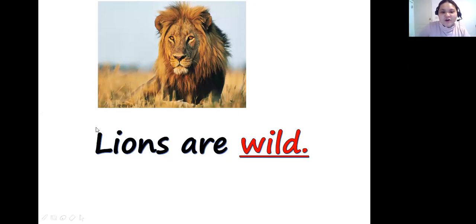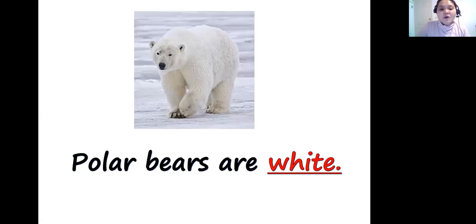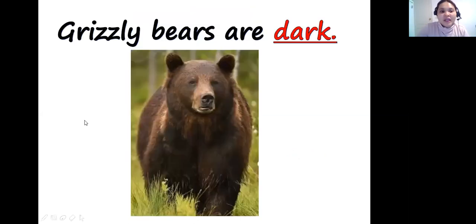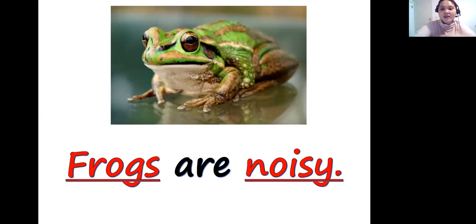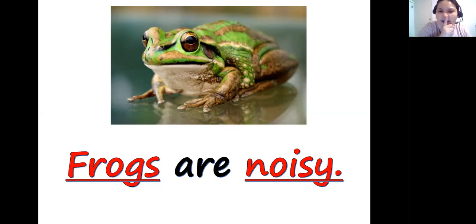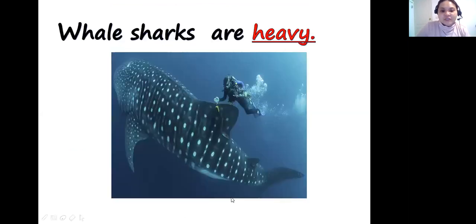Polar bears are white — they are white in color. Grizzly bears are dark — they are not white but dark in color. Frogs are noisy. When you say noisy, it means these frogs make lots of sounds. You can hear them; they are not quiet.